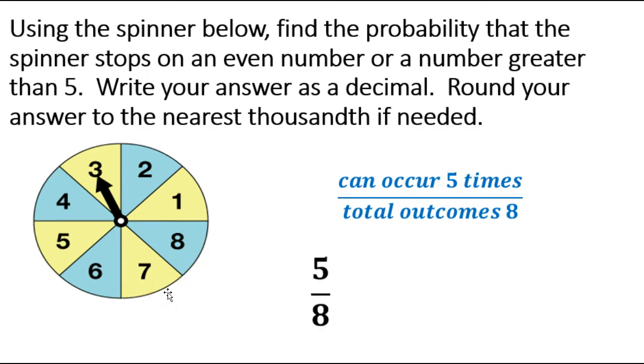So we can write that as a fraction. That would be 5/8. However, on this one, we're asked to write it as a decimal and round it to the nearest thousandth. Thousandth being 3 decimals. So that would give us 0.625 as our answer on this one.